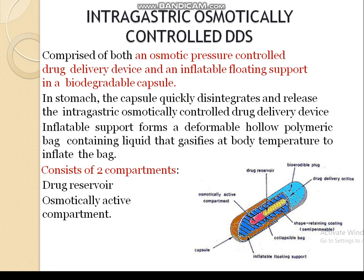Another approach is the intragastric osmotically controlled drug delivery system, which comprises both an osmotic pressure-controlled drug delivery device and an inflatable floating support in a biodegradable capsule. In the stomach, the capsule quickly disintegrates and releases the intragastric osmotically controlled drug delivery devices. The inflatable support forms a deforming polymeric bag containing liquid that gasifies at body temperature to inflate the bag. It consists of two compartments: a drug reservoir and an osmotically active compartment.